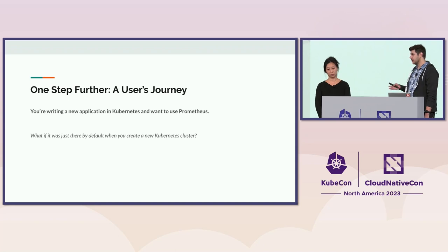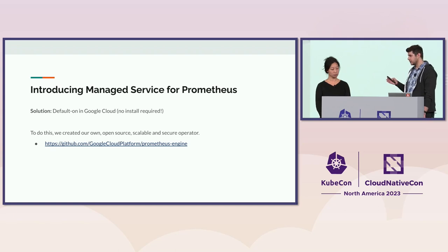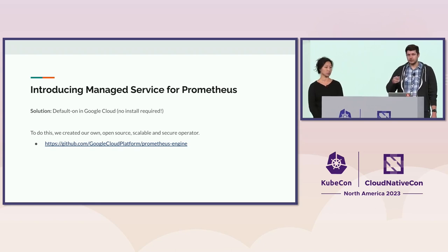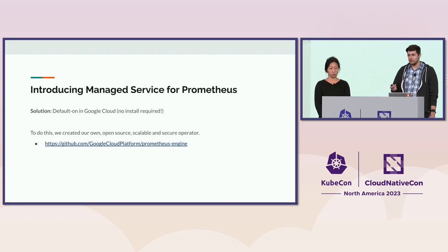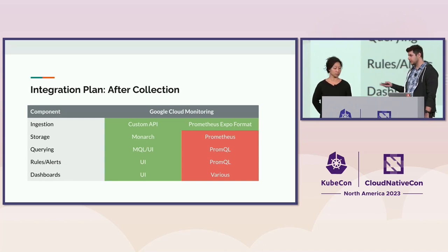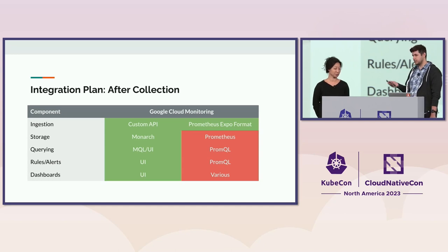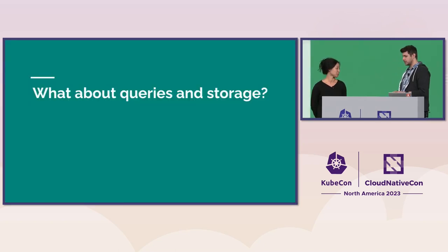We took this a step further: for new customers on Kubernetes who want to use Prometheus for the first time, we wrote a small operator that spins up a Prometheus instance on every node, and we've turned it on by default in Google Kubernetes Engine so new customers can immediately benefit. After doing that, our feature matrix shows customers can either scrape using their familiar SDK or use Prometheus, and it all goes to a centralized source: Monarch. But some customers may want to use PromQL, their dashboards, or alerting configurations — so what can we do about that?